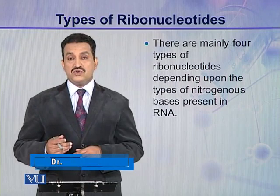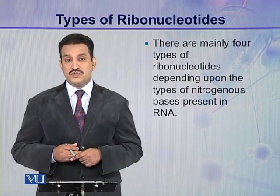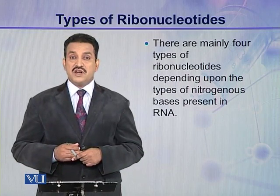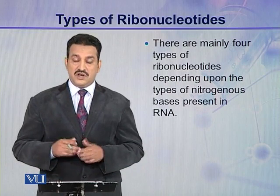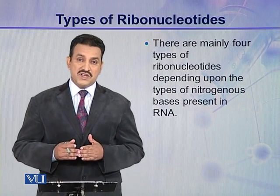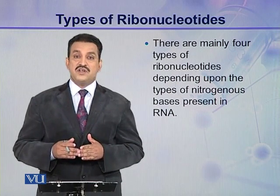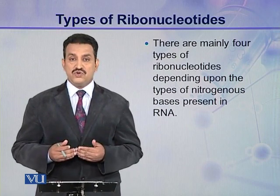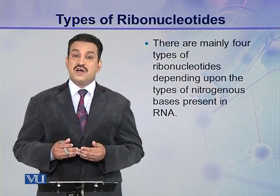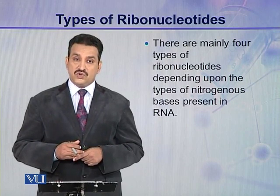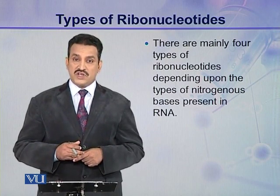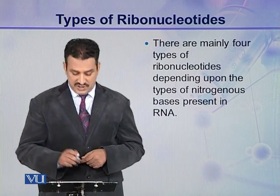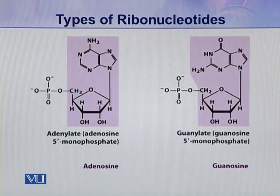There are four types of nitrogenous bases present in a ribonucleotide. One nitrogenous base is present in one ribonucleotide, but overall there are four types of ribonucleotides present in a ribonucleic acid. These four types depend on the type of nitrogenous base.